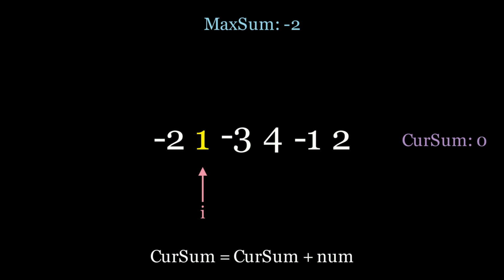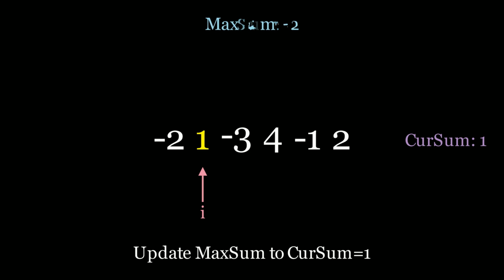So now I'm at 1. Current sum is 0, so we change it to 1. And now we ask ourselves, is 1 greater than negative 2? It is. So we have to update the maximum sum to 1. So let's update the maximum sum to 1. And now in this case, are we going to reset cur sum to 0?